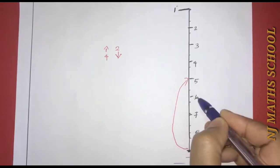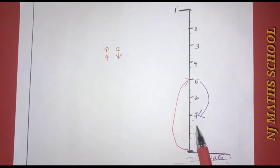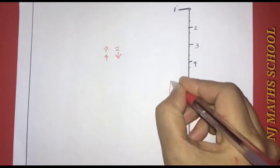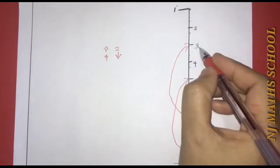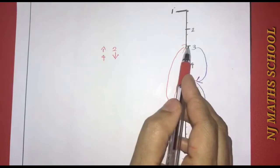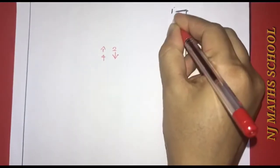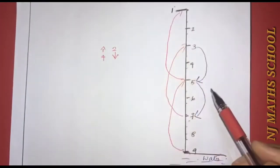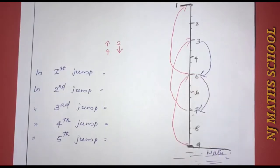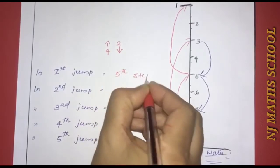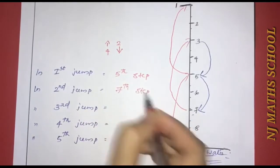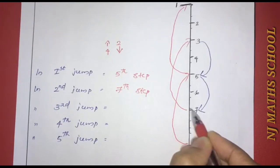From the fifth step, four steps up — one, two, three, four. Then two steps down — one, two — reaching the fifth step. Again four steps up — one, two, three, four. From the fifth step, going to the third step. Seven steps — one, two — in the third step. Third jump, four steps — one, two, three, four — reaching the third step. Next jump two steps down — one, two — fifth step. Fourth jump to fifth step — one, two, three, four.